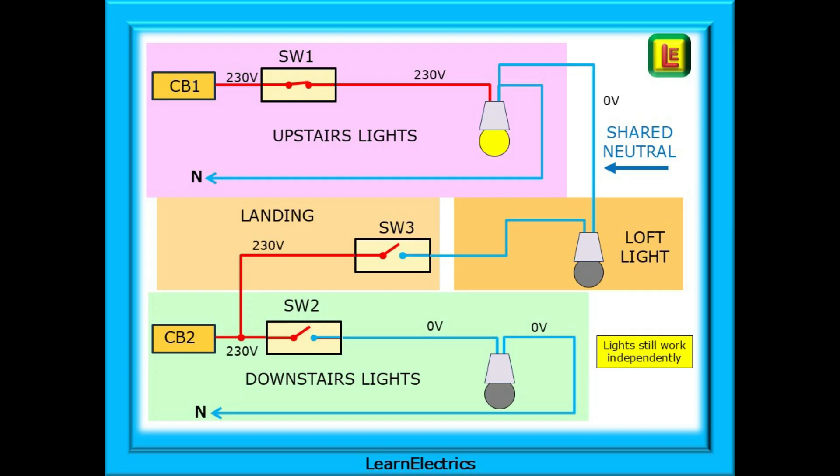Check the lights. The lights all work independently. The upstairs lights go on and off. No problem. Test the loft light. On off. On off. All OK. The loft light works fine, controlled by SW3 on the landing. And the downstairs lights. On off. On off. All is OK.